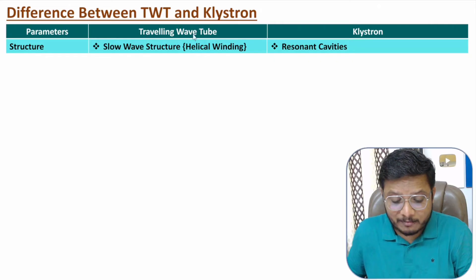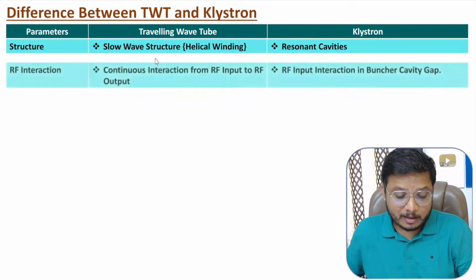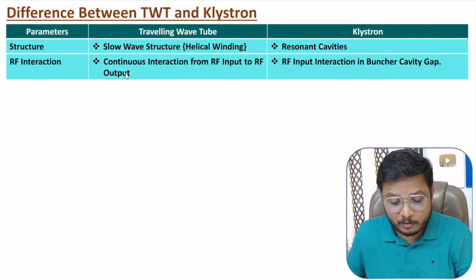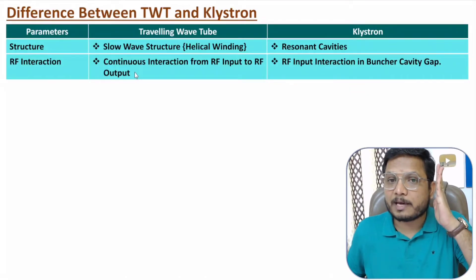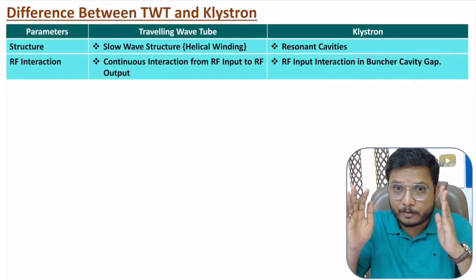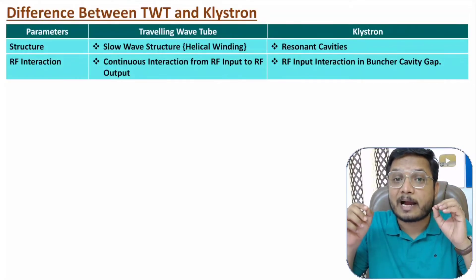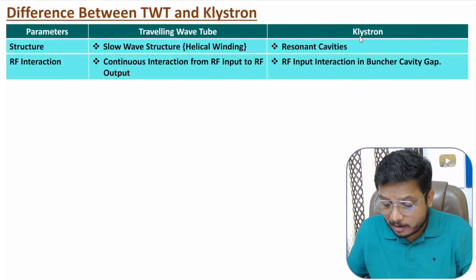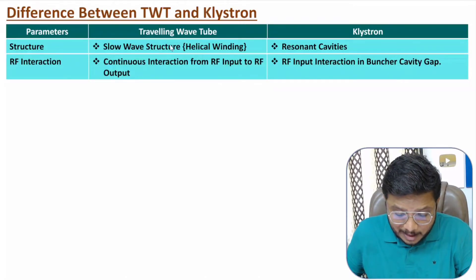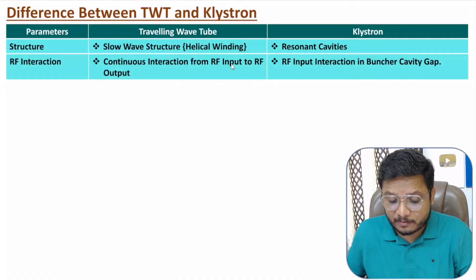The structure of the traveling wave tube is based on slow wave structure — helical winding — while the klystron uses resonant cavities. Regarding RF signal interaction, the traveling wave tube has continuous interaction from RF input to RF output through the helical winding, while in the klystron, RF signal interaction happens in the buncher cavity gap only — there is no continuous interaction.